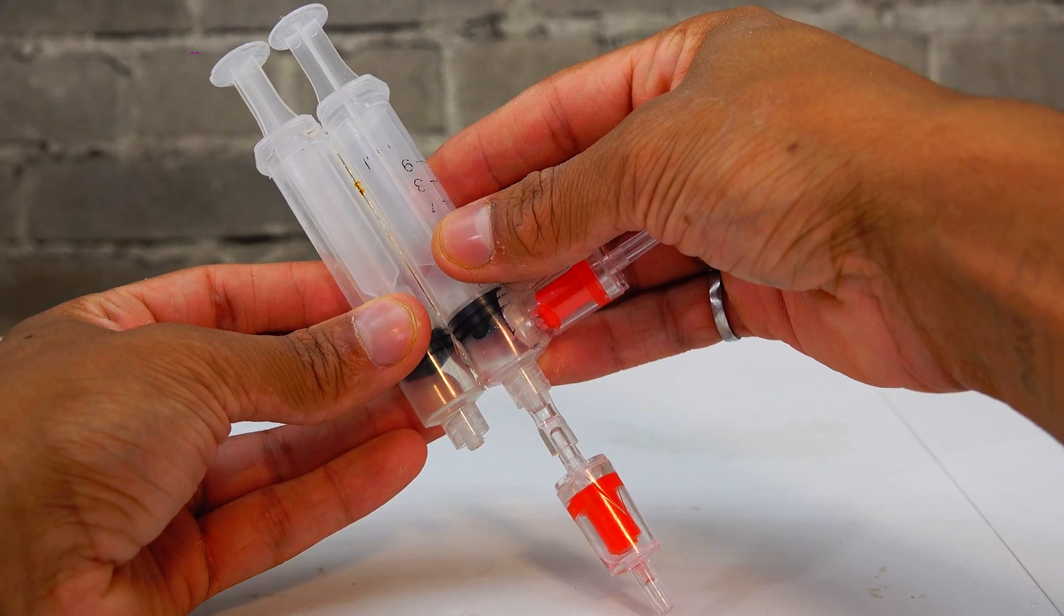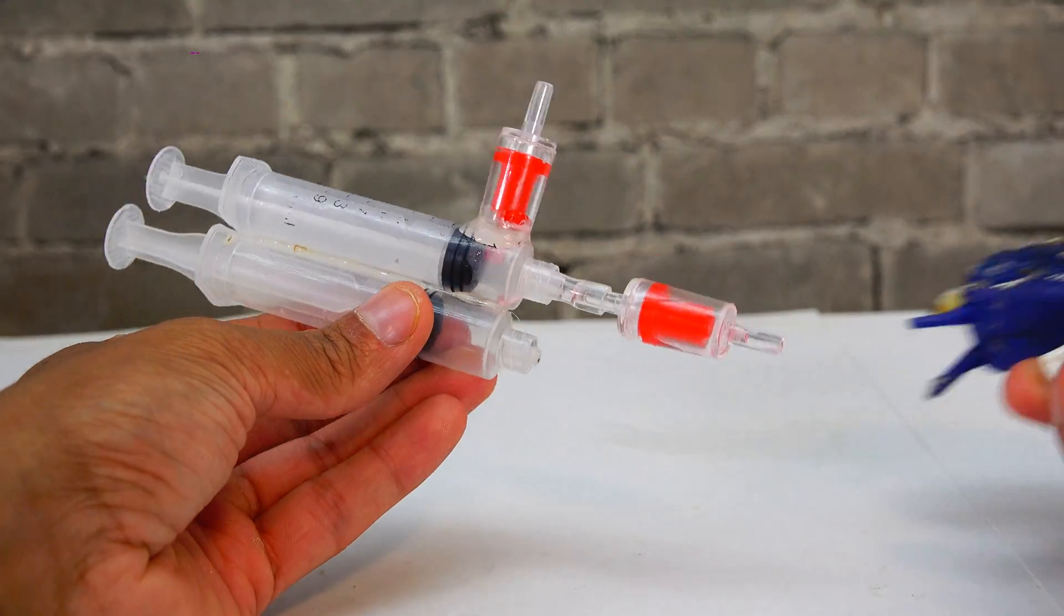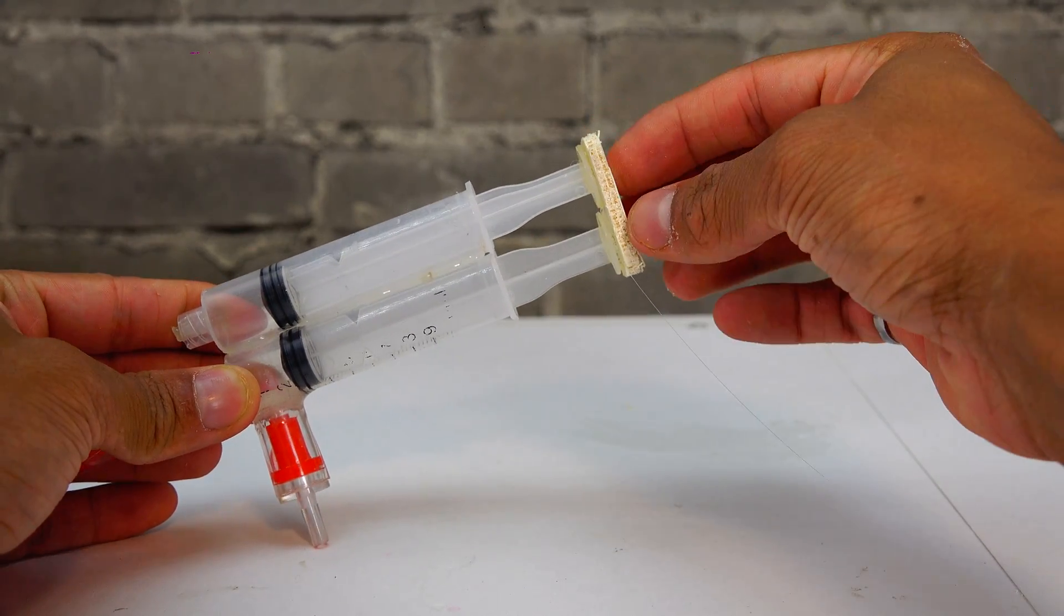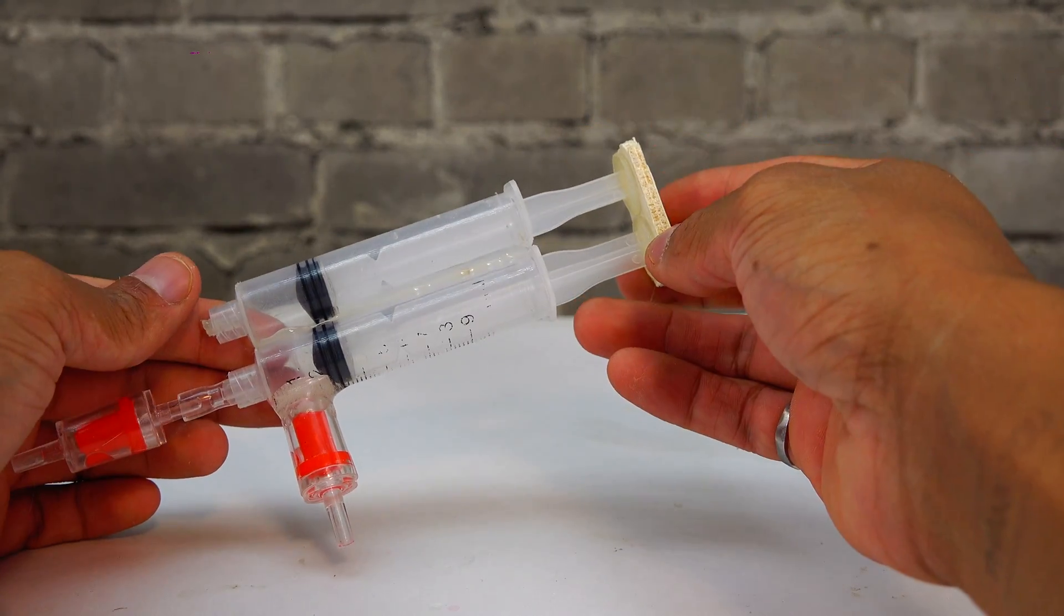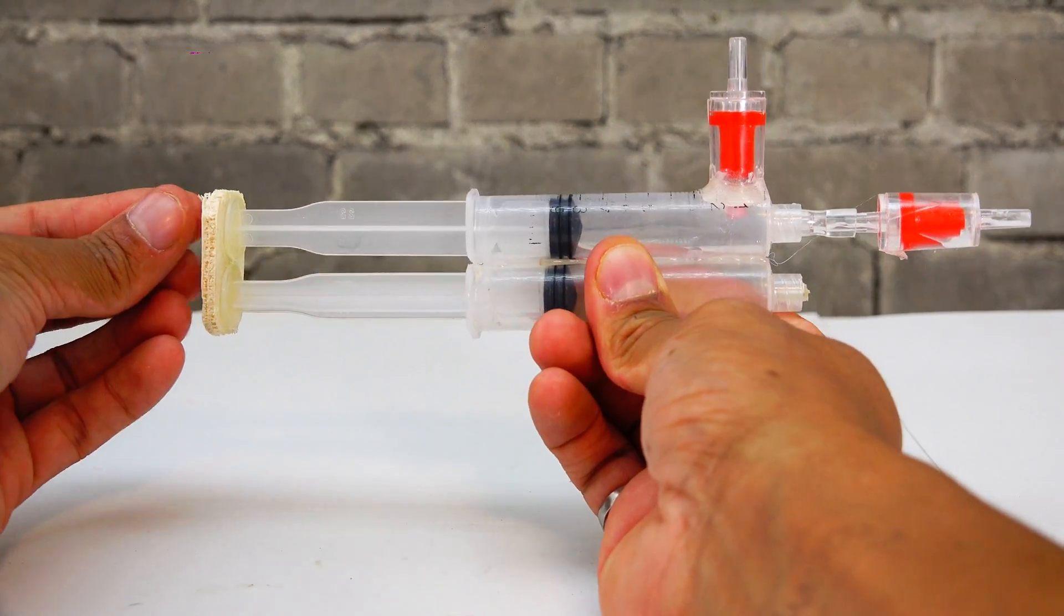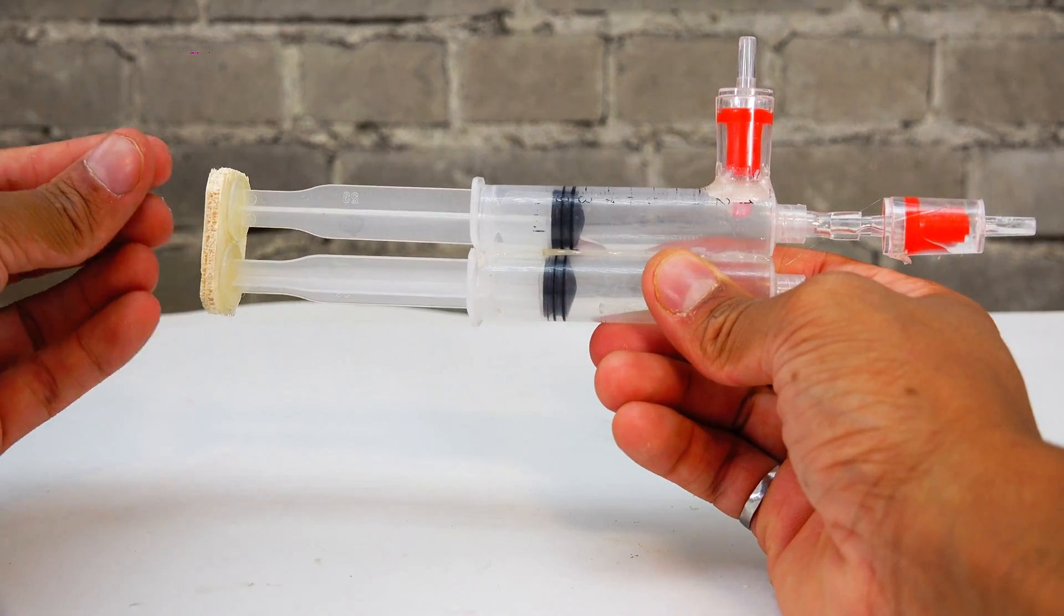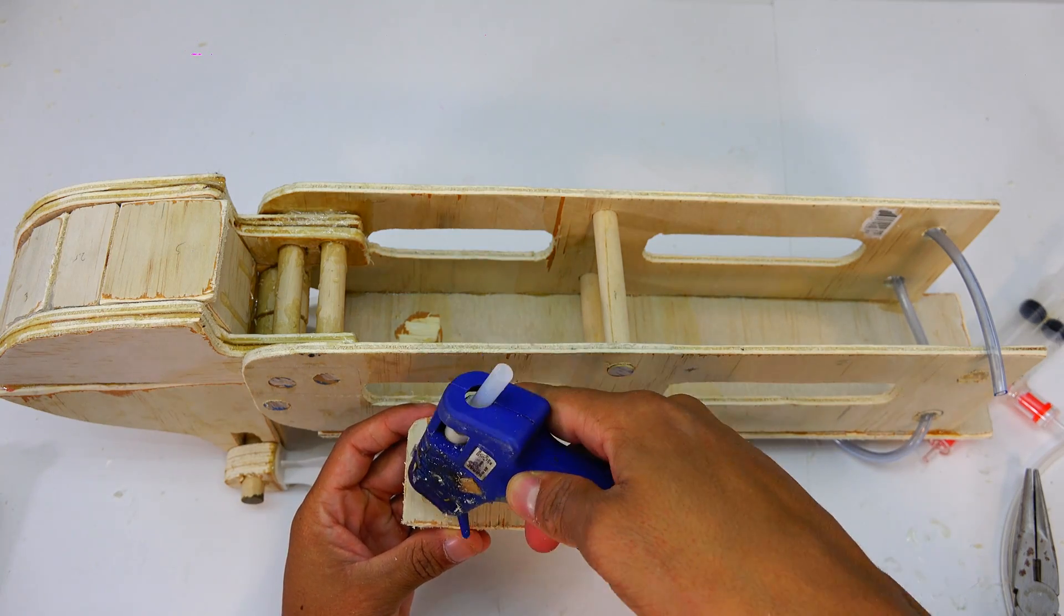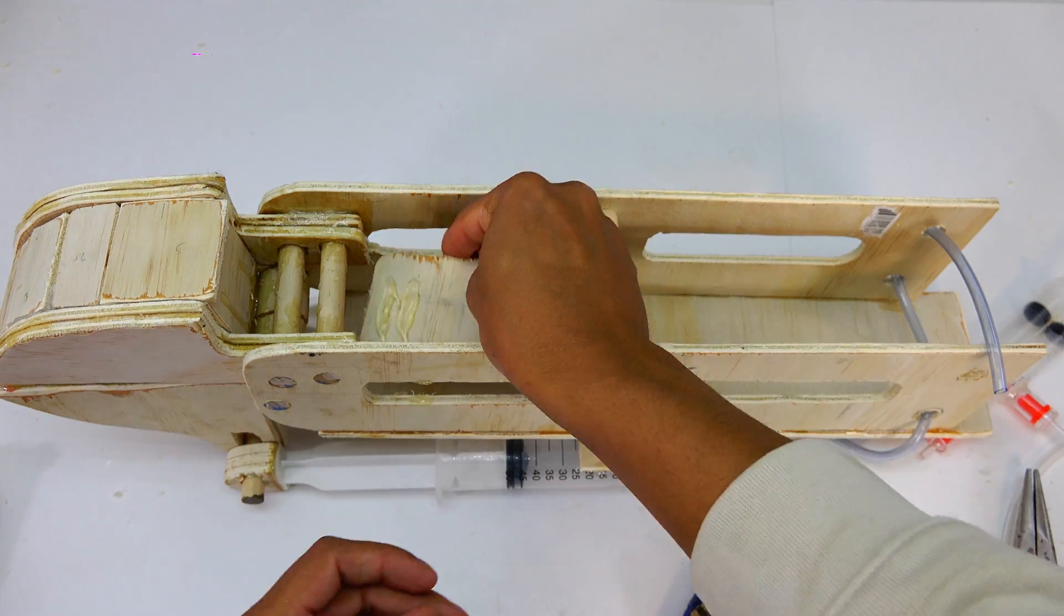And now I'm going to get one other syringe and we're going to seal it off and basically what that's going to do is it's going to act like a spring. So we're going to connect both of them together and because one of them is completely sealed off when we push it forward it creates some pressure because it's still sealed off and that air pressure pushes the other syringe back into its original position.